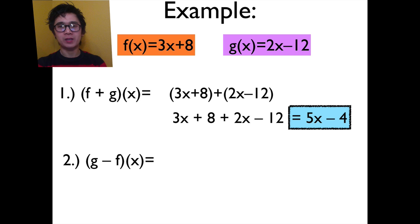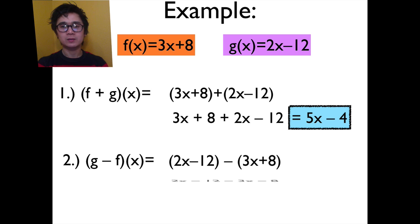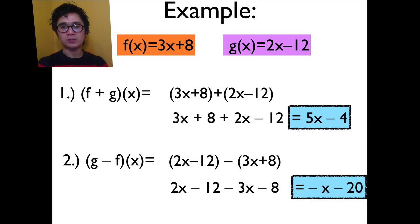Similarly, if you have g minus f of x, by combining the two functions using subtraction, we'll have 2x minus 12 minus 3x minus 8. And by simplifying our polynomial, g minus f of x is equal to negative x minus 20.